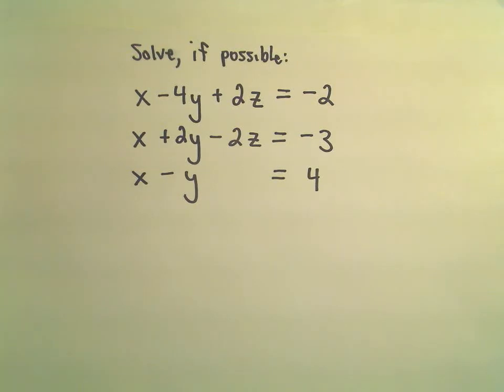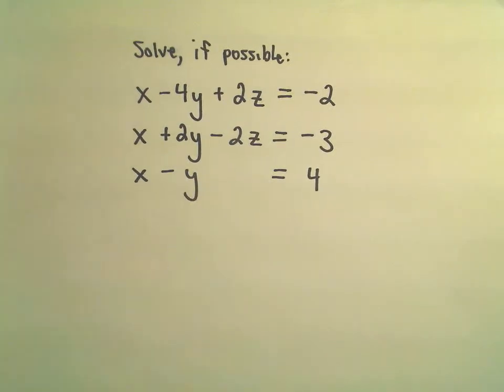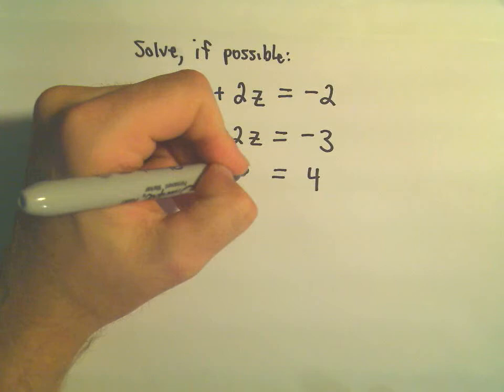x minus 4y plus 2z equals negative 2. x plus 2y minus 2z equals negative 3. And then our last equation is just x minus y equals 4. You could write in plus 0z if you want, if you actually want to see that term.